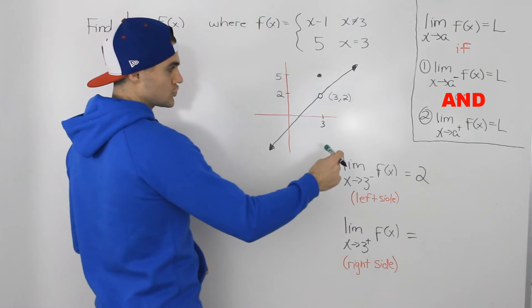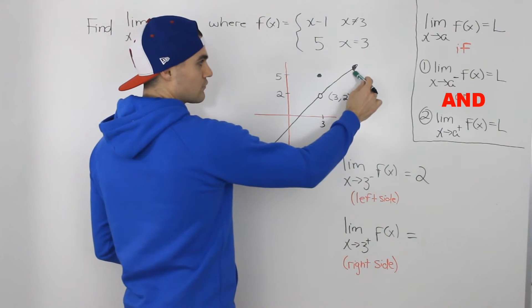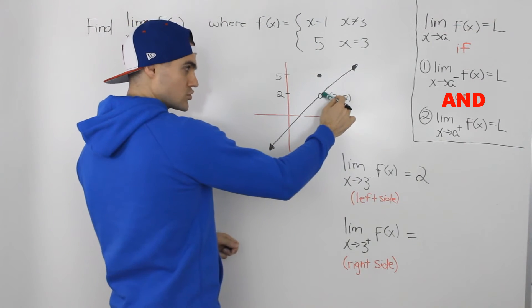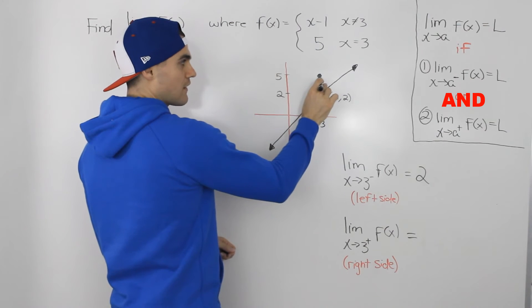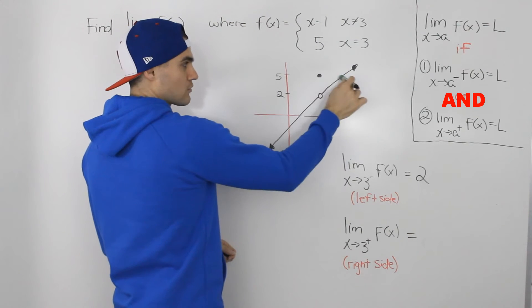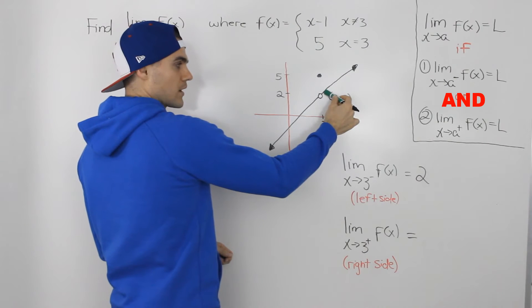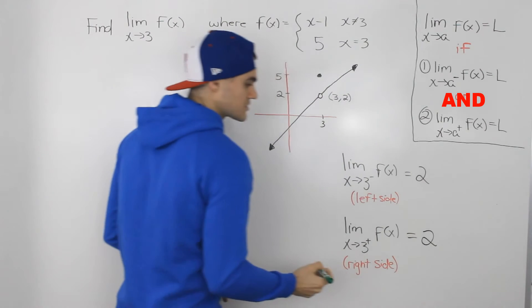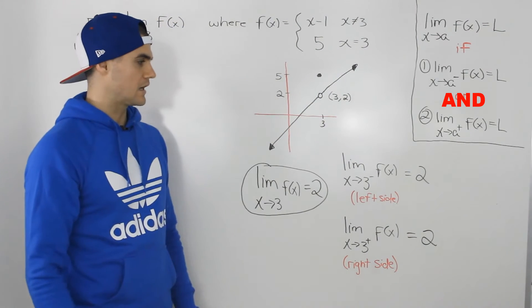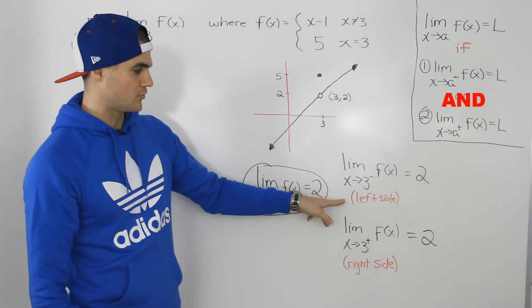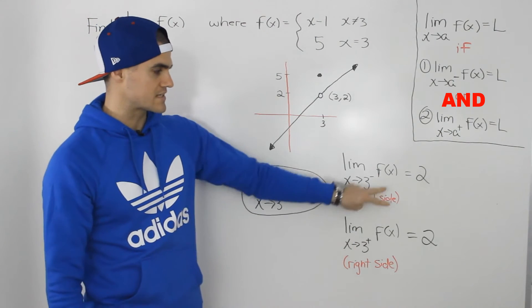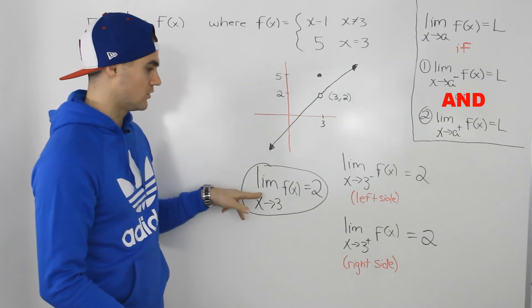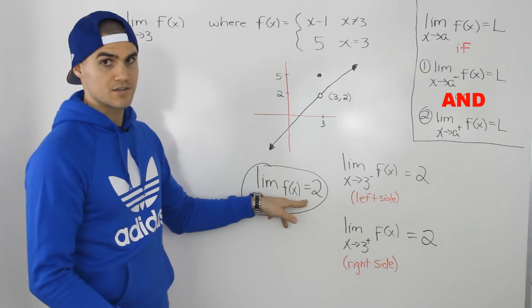Similarly, if we approach an x value of 3 from the right side, the y value that the function is approaching is 2. It's not this 5 — the 5 is defined at an x value of 3, but as we approach 3 from the right side, the y value is approaching 2. So this limit is also equal to 2. Because the function approaches that same value of 2 from both the left side and the right side, we can conclude that the limit as x approaches 3 in general is also equal to 2.